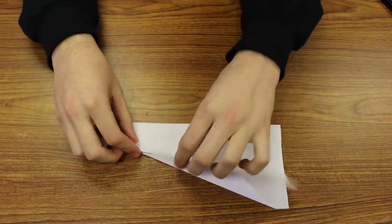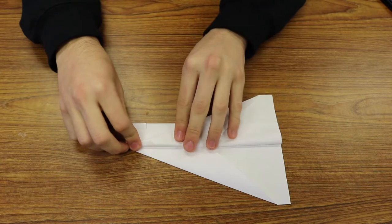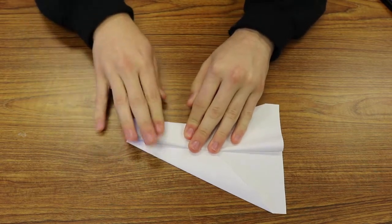Fold the wings down so that you're making a straight line across from the top of the snub nose. Repeat it on the other side.